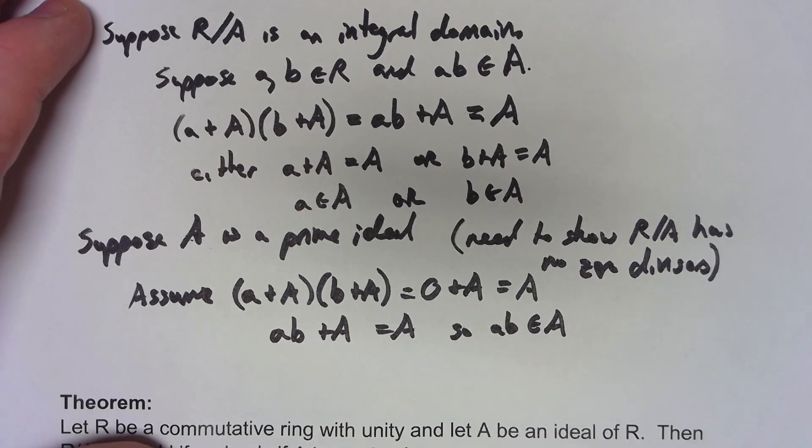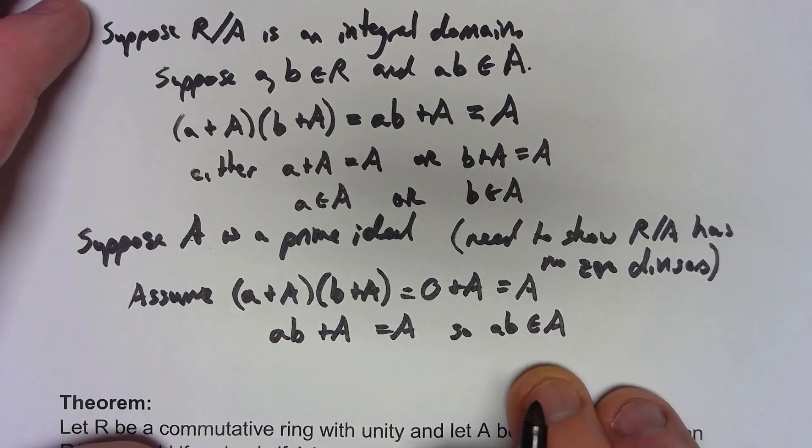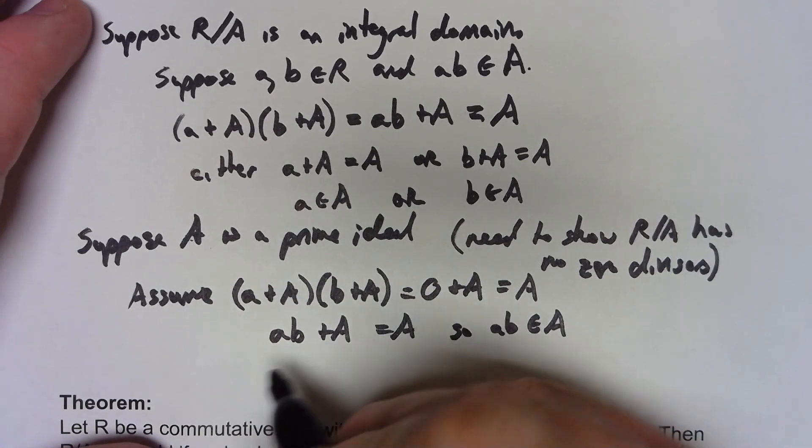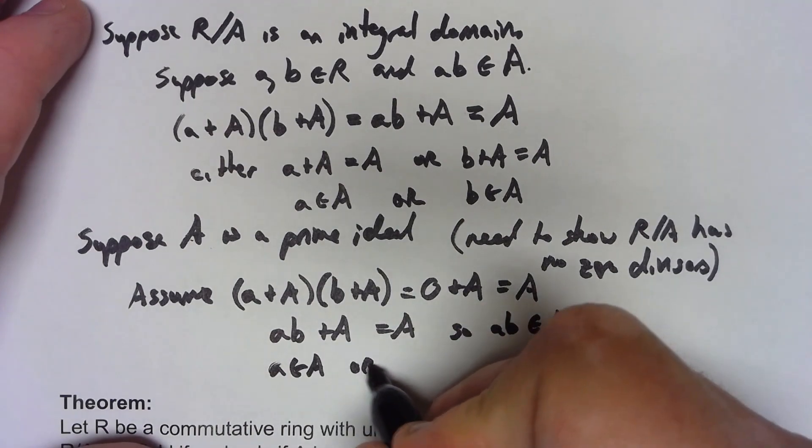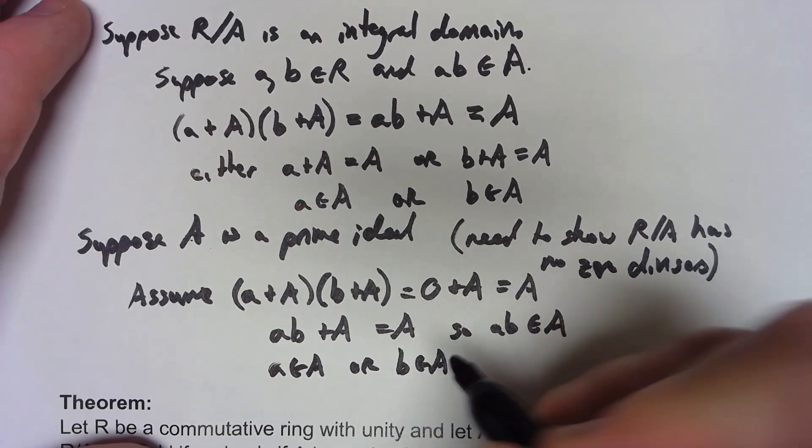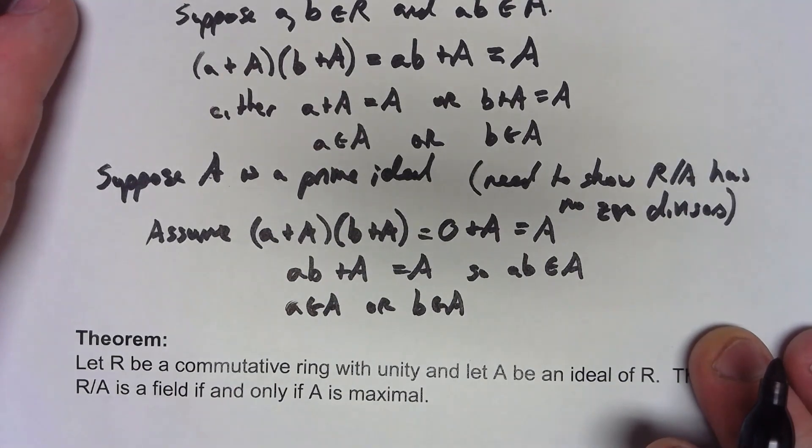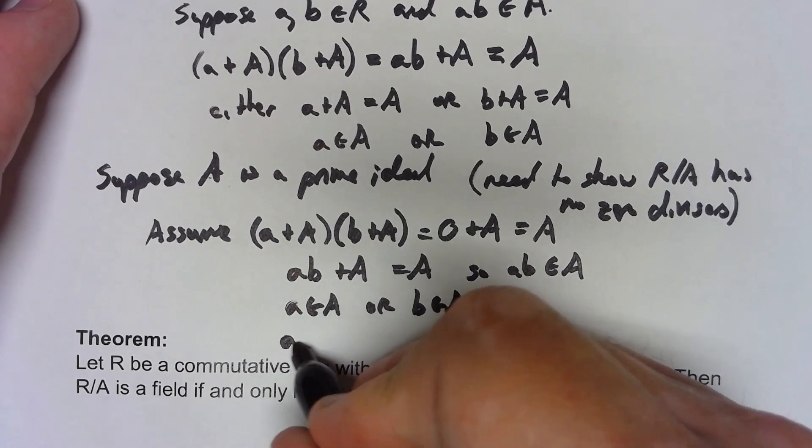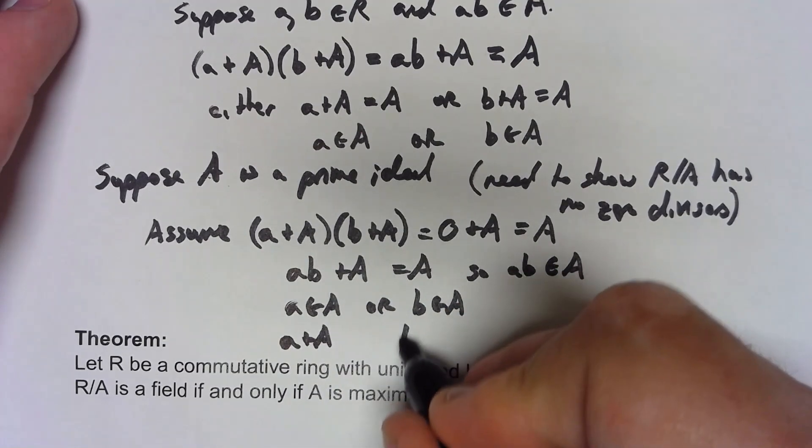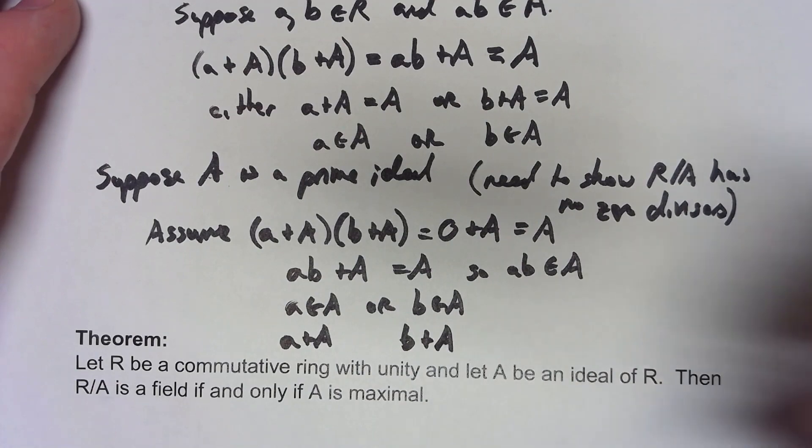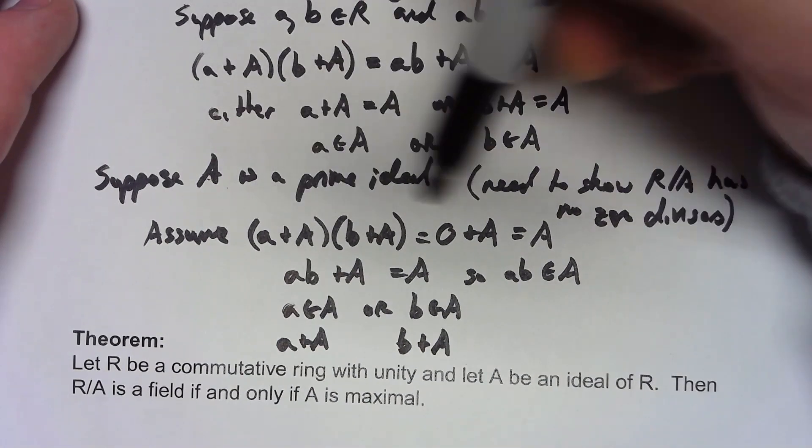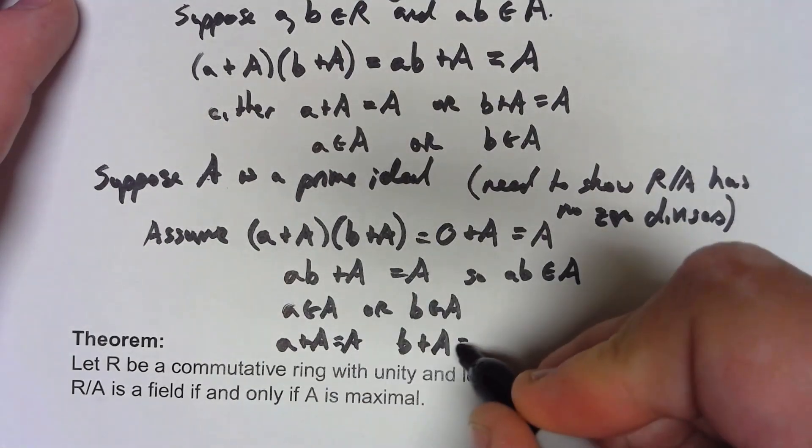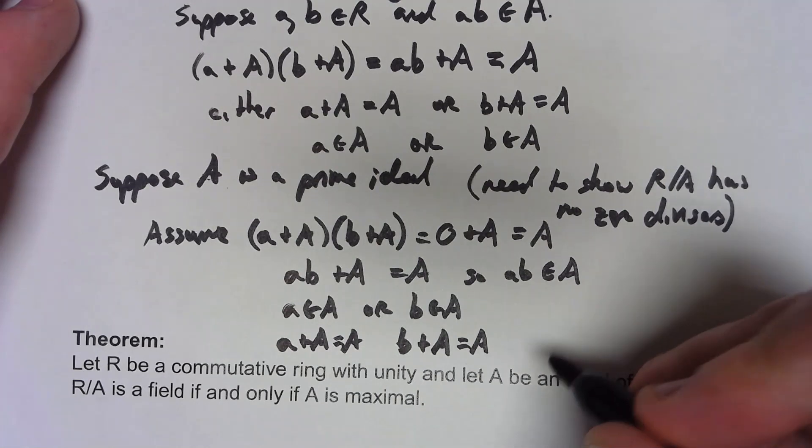But A was a prime ideal. Since ab is an element of A, that must mean that a is an element of A or b is an element of A, because that's the definition of a prime ideal. And so therefore, either a+A is the zero or b+A is the zero. So we have two things equaling zero. It meant that one of the two things had to be zero. Therefore, R/A is an integral domain.